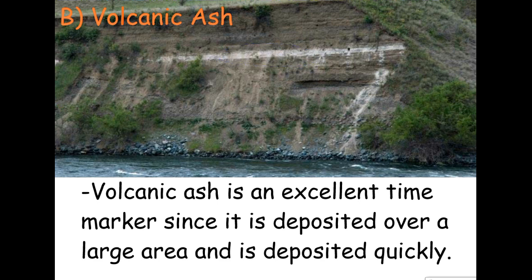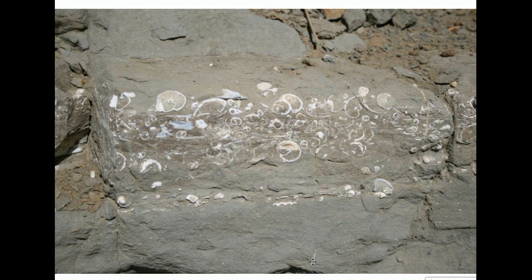Volcanic ash is an excellent time marker because it's deposited over a very large area — not just around the volcano, but spreading into many other locations. And this happens geologically very quickly. If a volcano erupts and the ash deposits over the course of even a year, that's super fast. If I find that ash layer in one place and in another, I can correlate those layers. But the number one thing we're going to use to help us correlate or match up rock layers are fossils.